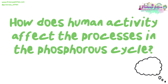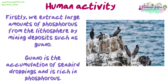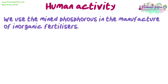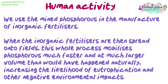How does human activity affect the processes in the phosphorus cycle? Firstly, we extract large amounts of phosphorus from the lithosphere by mining deposits such as guano — guano is the accumulation of seabird droppings and is rich in phosphorus. We use the mined phosphorus in the manufacture of inorganic fertilisers. When these are then spread onto fields, this whole process mobilises phosphorus at a much faster rate and much larger volume than would have happened naturally, increasing the likelihood of eutrophication and other negative environmental impacts.